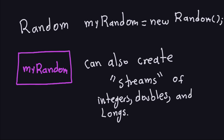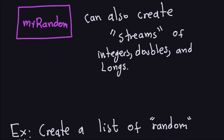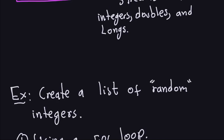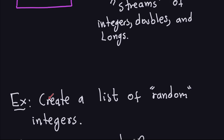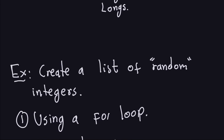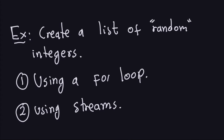So let's go into the details. We're going to create a list of random integers. We'll do it in two ways: one way using a for loop, which is the normal way done before Java 8, and the other way using streams to create that list of random numbers.